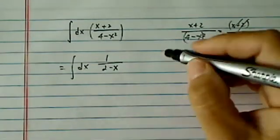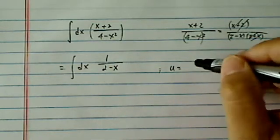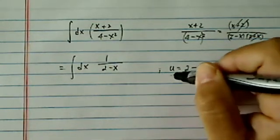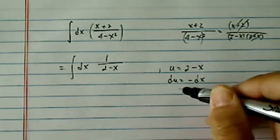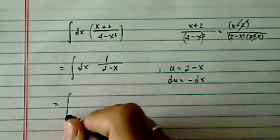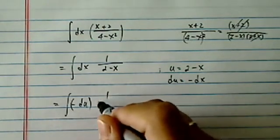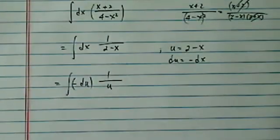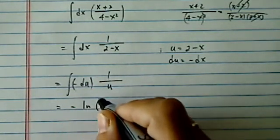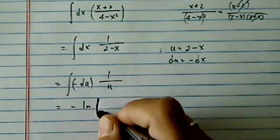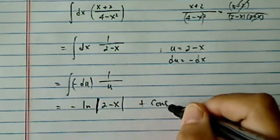Okay, that's a natural log form. If you don't see it, what we can do is substitution. Let u equal 2 minus x, then du equals minus dx. So we have minus du over here, and then 1 over u. So this is minus natural log of u, and u is — let's make this one correct — plus a constant.